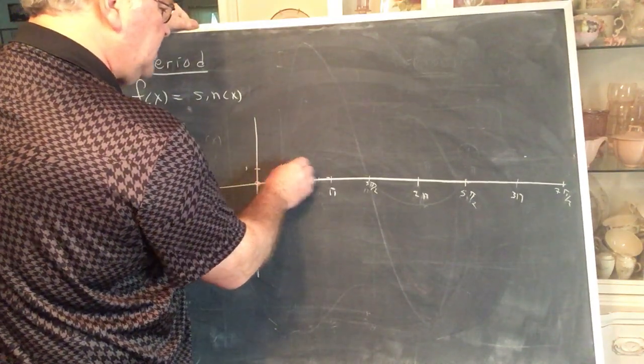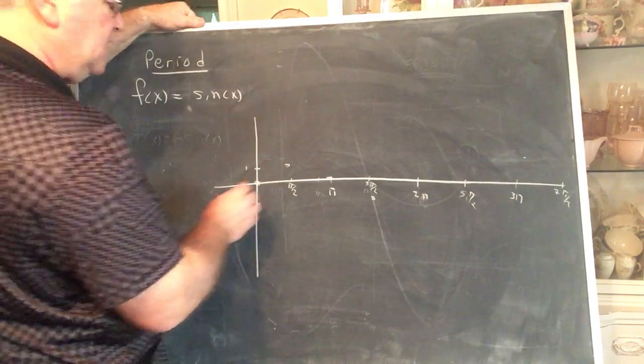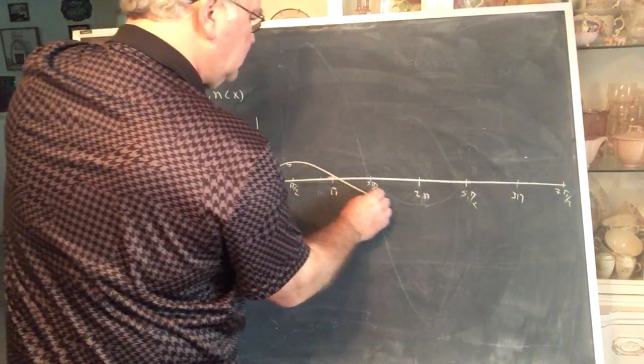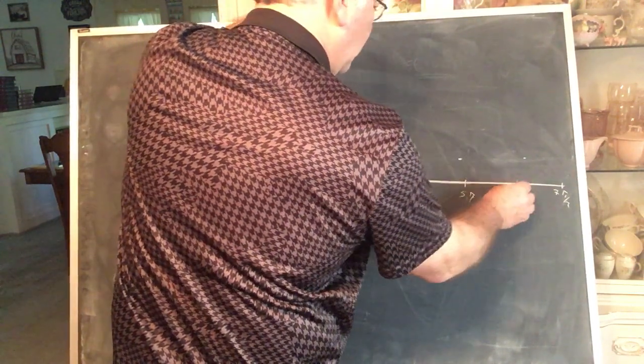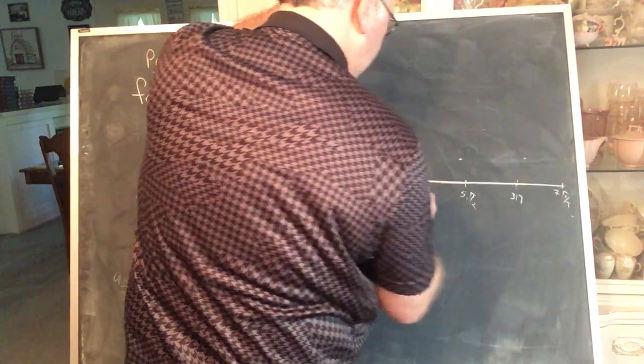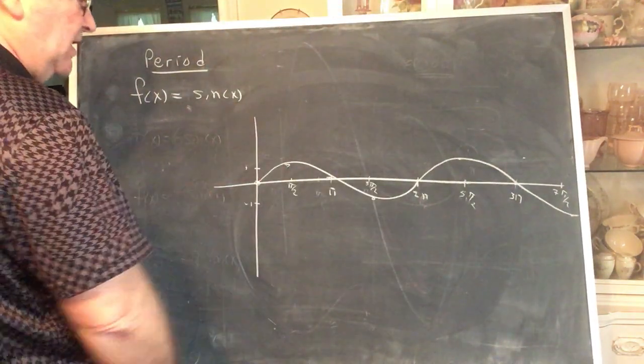So what do we do? We have the basic points, remember the basic points are really what guide us in drawing this graph here. Then we could do for another period if we wanted to, the same basic points, 1, 0, negative 1, if it had space it would be 0 again. And we need to do the same thing in this direction.